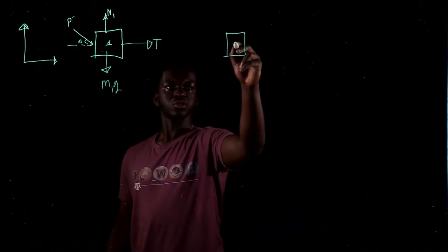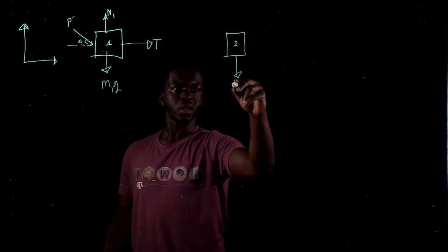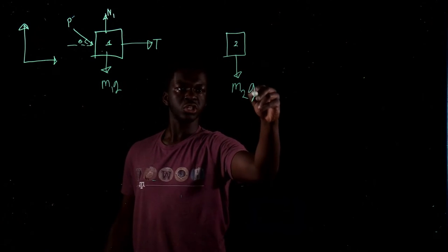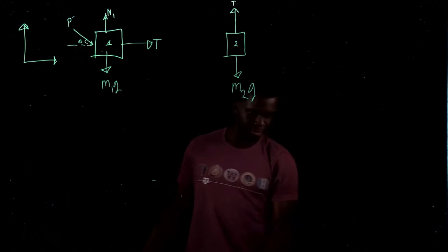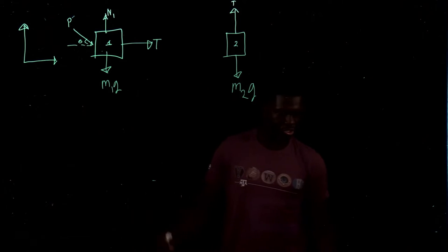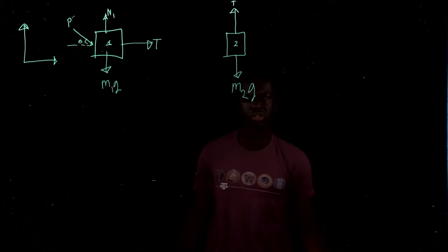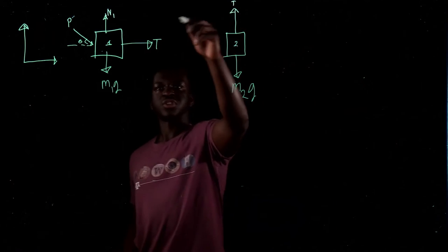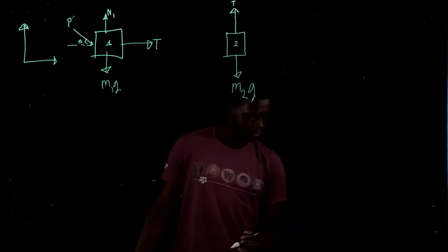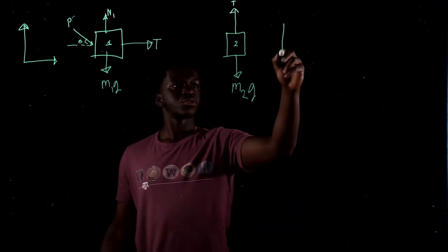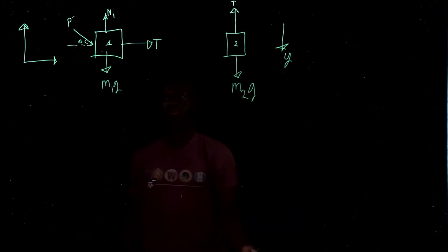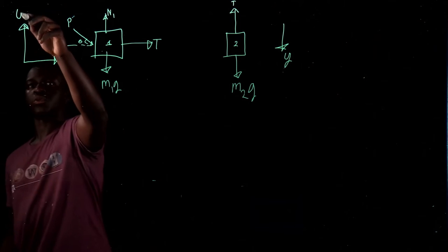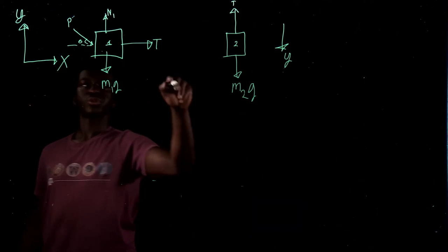For block two, we just have M2G downward and the tension force T upward — the same T as in block one, because it's a massless unstretchable rope. For block two, we set positive Y downward since the block is moving down. The acceleration of block 1 in x equals the acceleration of block 2 in y, so we name them all A since they're moving together by one string.